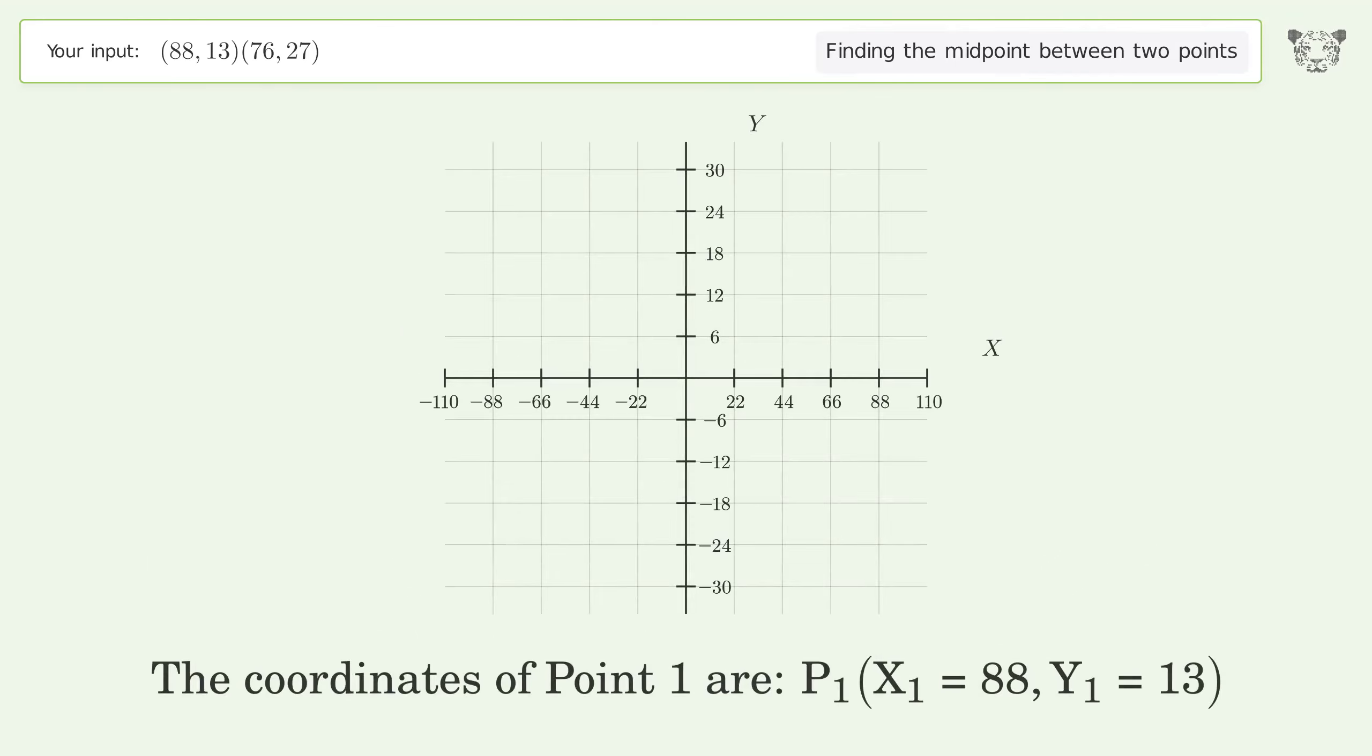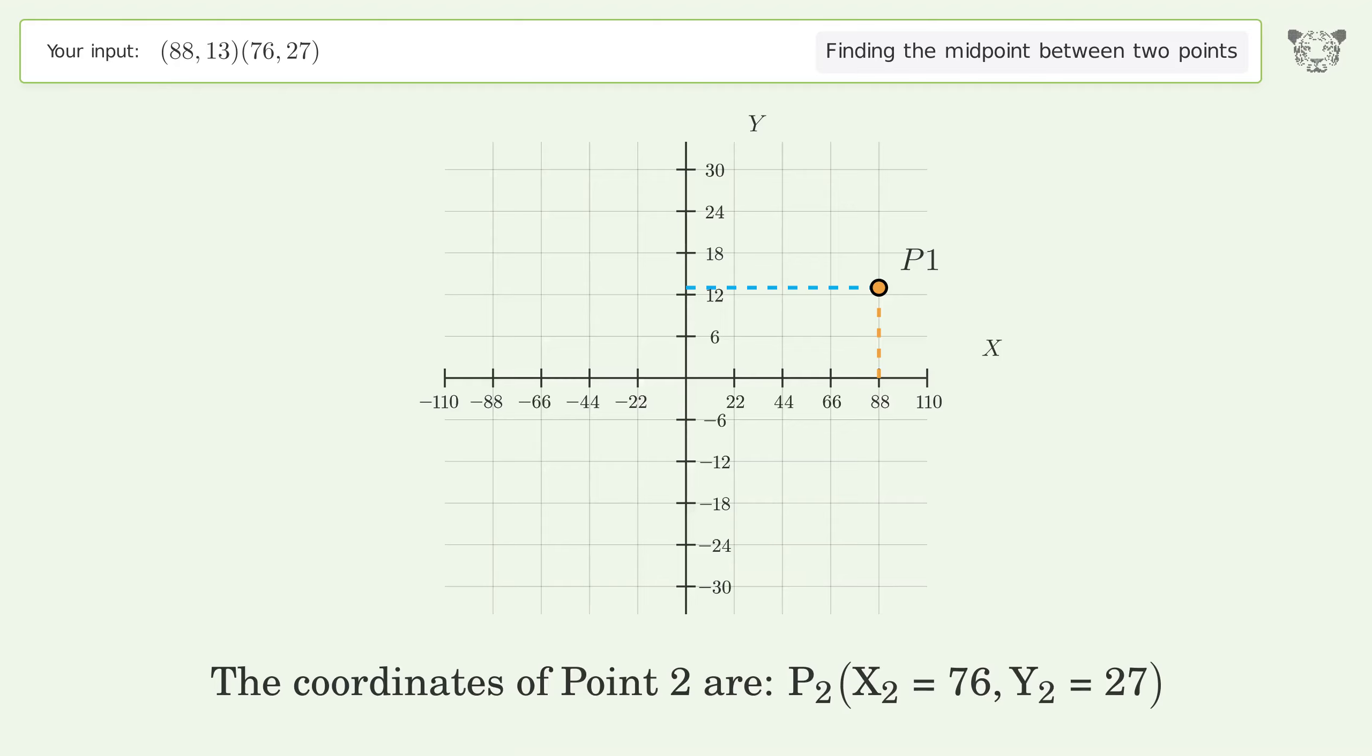The coordinates of point 1 are X1 equals 88, Y1 equals 13. The coordinates of point 2 are X2 equals 76, Y2 equals 27.